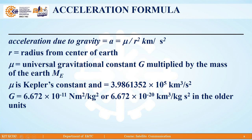Let us discuss the acceleration formula. The acceleration due to gravity is a = μ/r², where r is the radius from the centre of earth, and μ is the universal gravitational constant G multiplied by the mass of the earth M_e. μ is Kepler's constant and it is given by 3.9861352 × 10⁵ km³/s². G is equal to 6.672 × 10⁻¹¹ N·m²/kg².